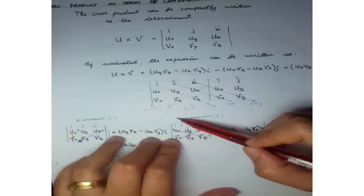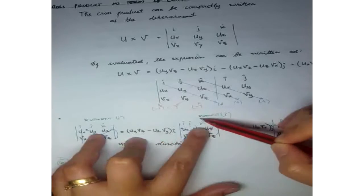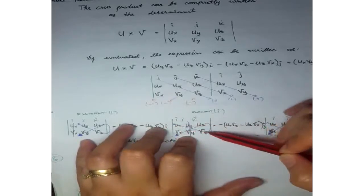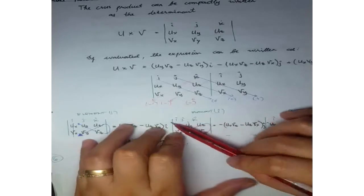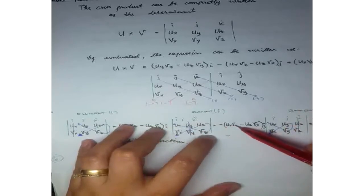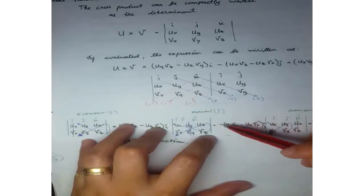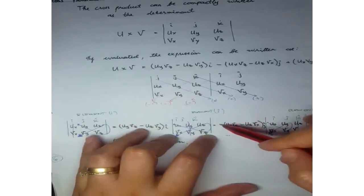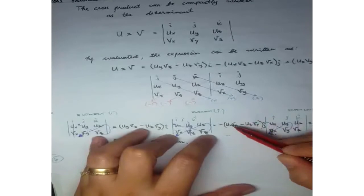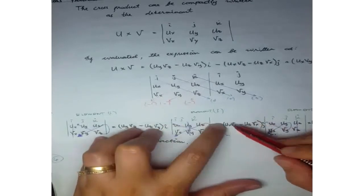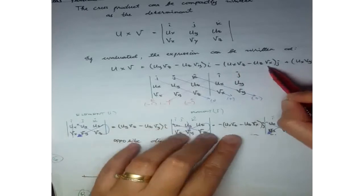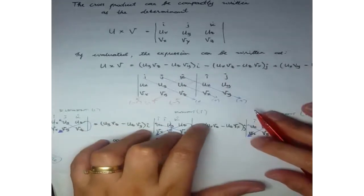For element J, cover the J column and follow the same pattern. Note that there is always a negative sign before the J element. So we have: negative (Ux·Vz minus Uz·Vx). The J element always carries this negative sign at the front.